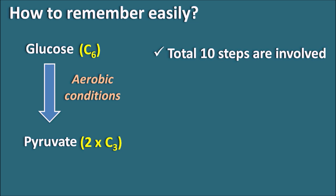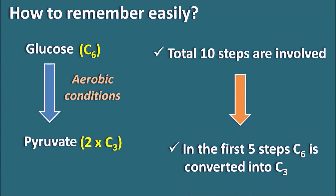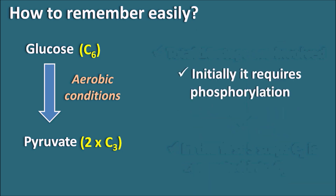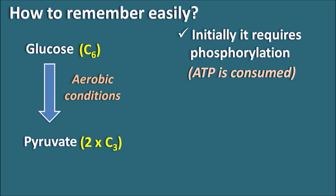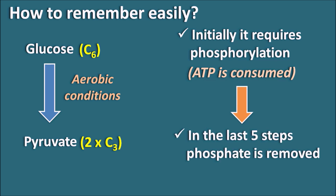Glycolysis involves totally 10 steps. Within the first 5 steps, glucose is converted into a C3 molecule — that is where the splitting takes place. Initially, glycolysis requires phosphorylation, supplied in the form of ATP, so ATP is consumed in the initial reactions. In the last 5 steps, phosphate groups are removed and ATP is released. So in the first 5 steps ATP is consumed, and in the next 5 steps ATP is released.